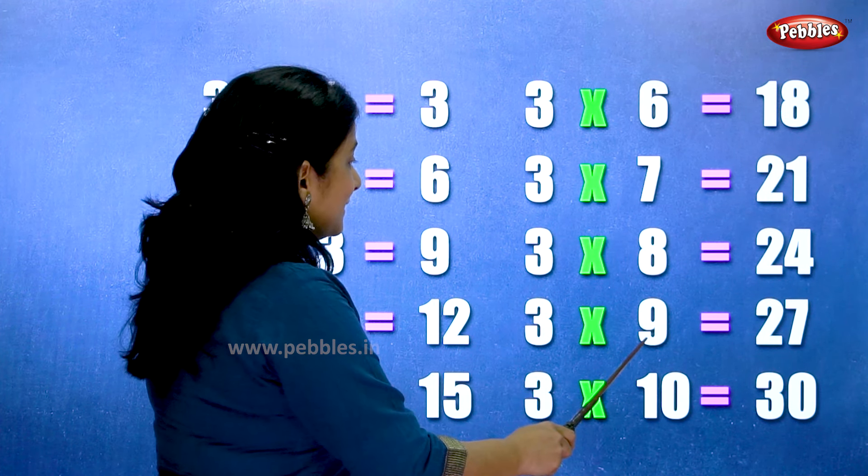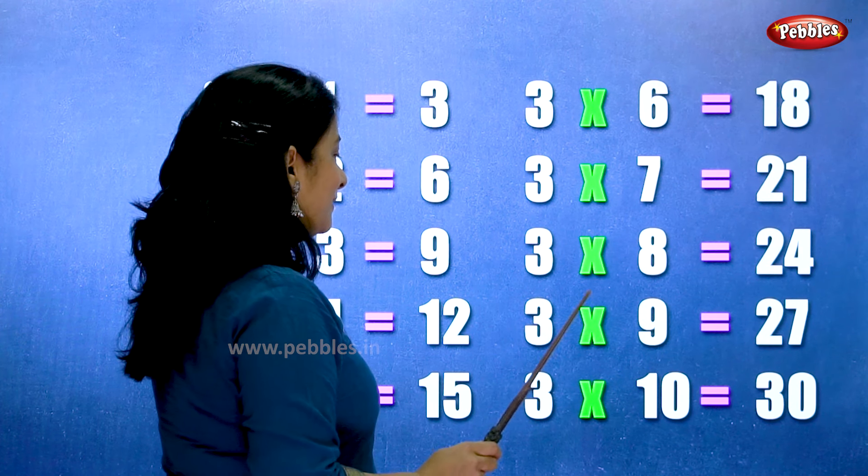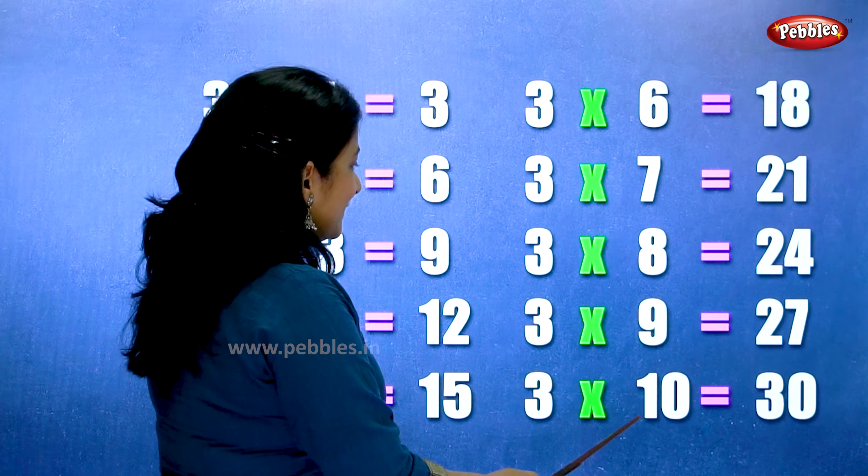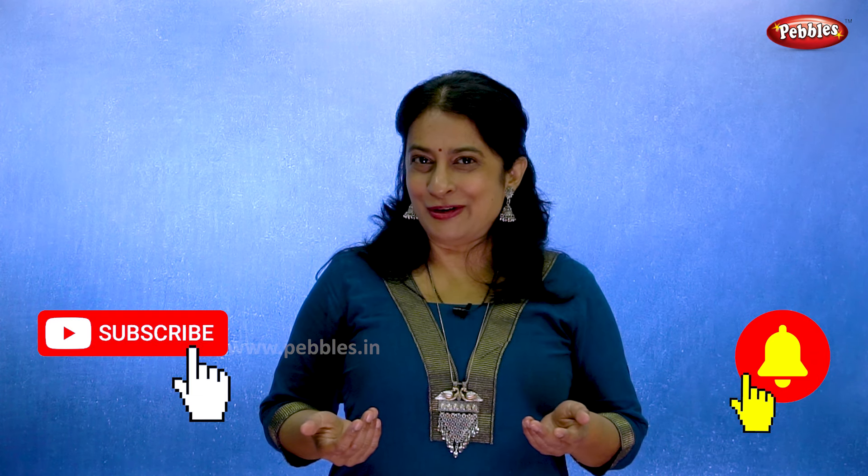Three nines are twenty-seven. Three tens are thirty. Thank you for watching the video.